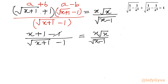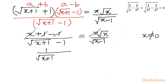Now we cancel the common terms. The x terms also cancel since x is non-zero. So I will write: 1 over square root of (x + 1) minus 1, and the right hand side is square root of x over square root of (x − 1).